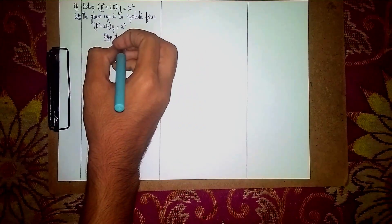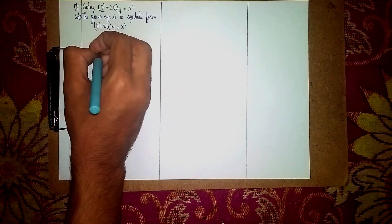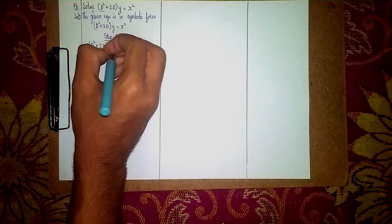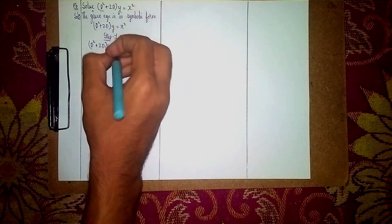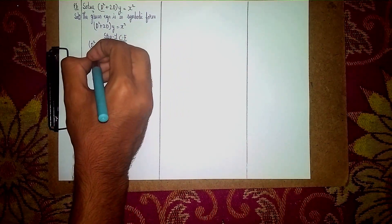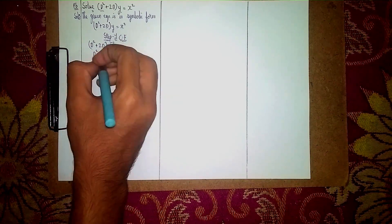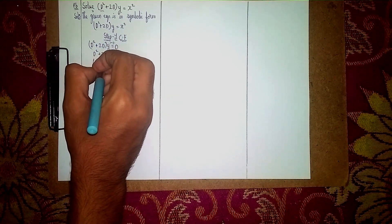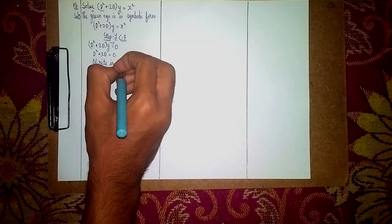For the complementary function, take the LHS: D² + 2D into y = 0. We don't consider the RHS value, so we set it equal to zero. Our equation becomes D² + 2D = 0. Now write this equation in auxiliary form.